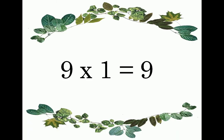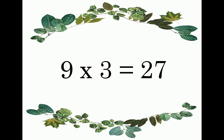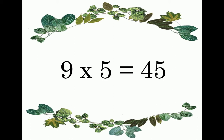Nine ones are nine. Nine twos are eighteen. Nine threes are twenty-seven. Nine fours are thirty-six. Nine fives are forty-five. Nine sixes are fifty-four.